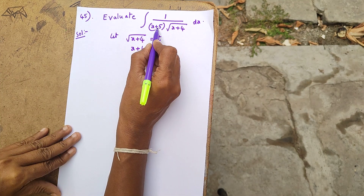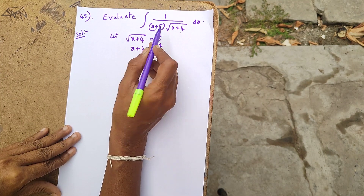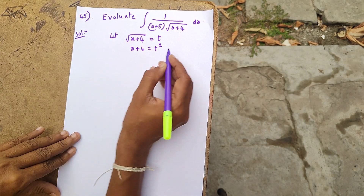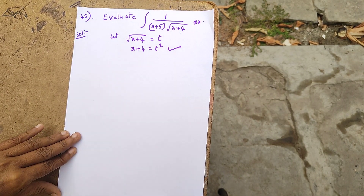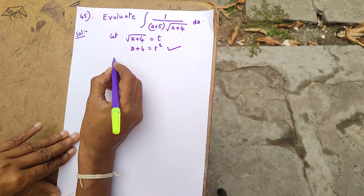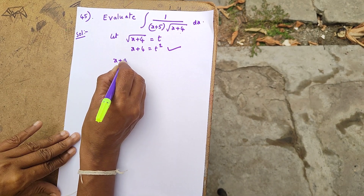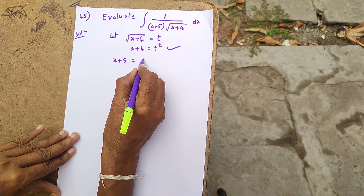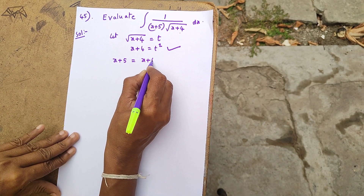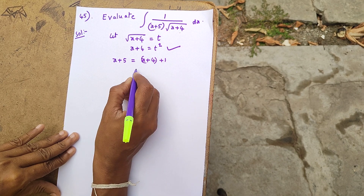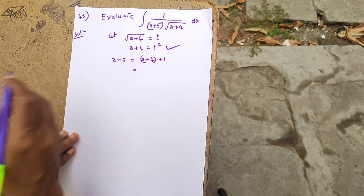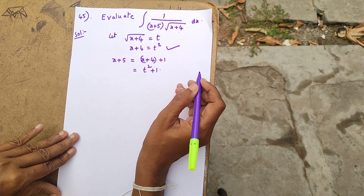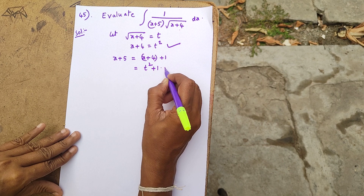So we have root of (x plus 4) equals t. And x plus 4 equals t squared, so x plus 5 equals t squared plus 1.